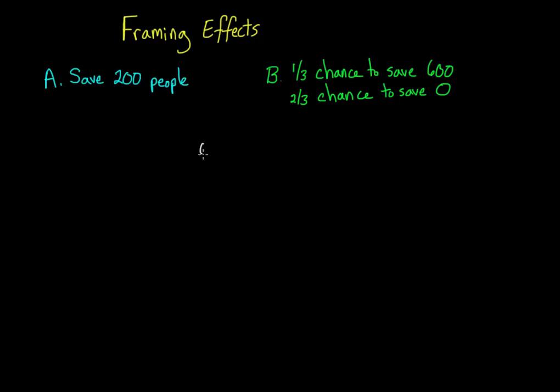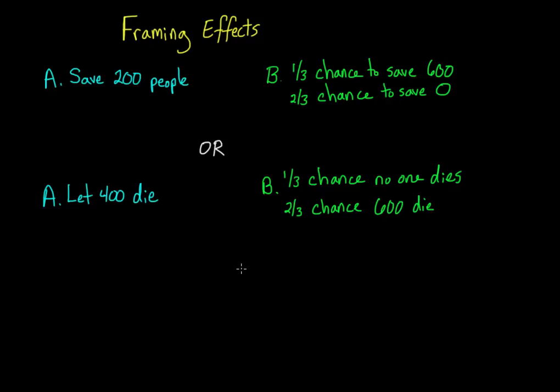Okay, now try this one. The same disease is coming through, and you again have two options. If you pick option A, then there's a 100% chance that exactly 400 people will die. If you pick option B, then there is a one-third chance that no one will die, and a two-thirds chance that 600 people will die. Now, which option do you want to pick?